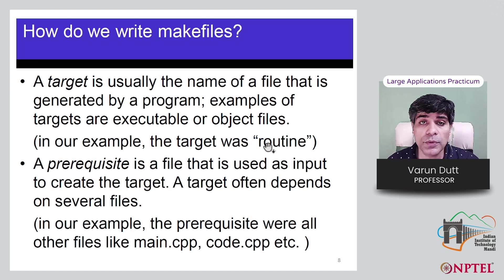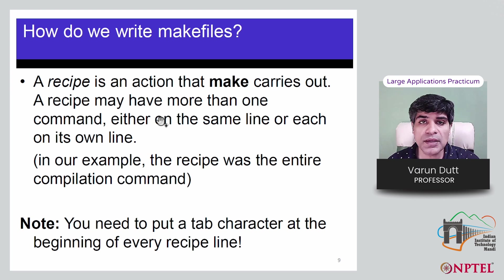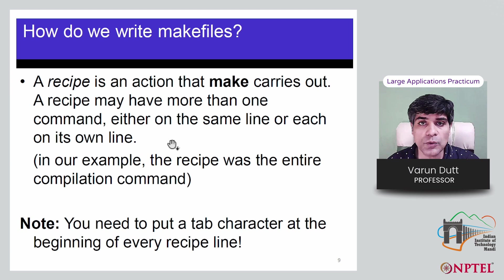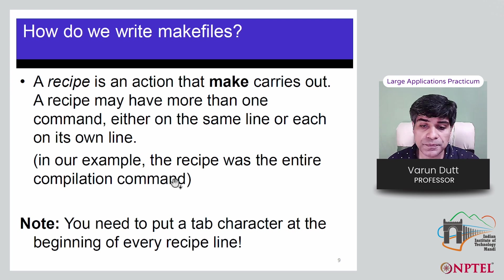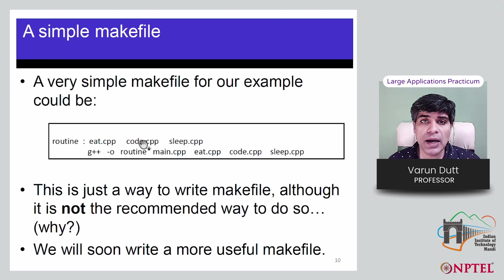Generally, a target is the name of the file generated by the program — typically an executable, like 'routine'. The prerequisites are the things used as inputs to create the target. The target often depends on several files which are the prerequisites — in our example, the CPP files. The recipe is the action make carries out to go from prerequisites to the target, such as the g++ statement. Remember that every recipe statement must be tabbed for the make utility to recognize it.